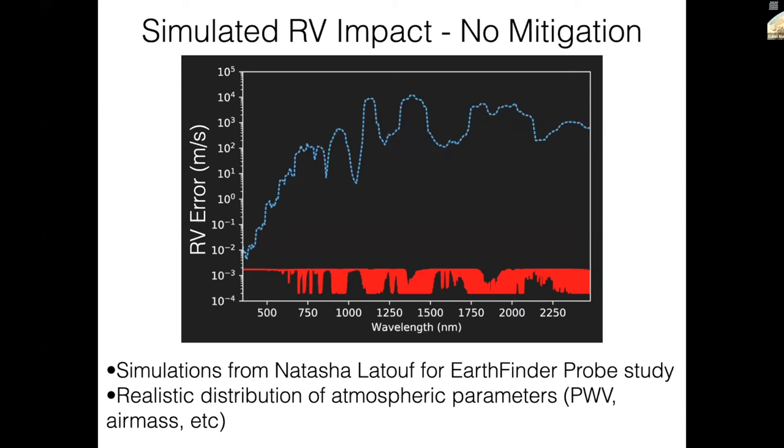This is a nice plot from simulations by Natasha Latouf. This was done in preparation for the EarthFinder probe study. Here she's looking at the expected RV bias in the no mitigation region, so we're doing nothing about these telluric lines at all. The telluric spectrum from the optical to the infrared is shown in red, and the expected RV error induced by just these lines themselves is traced out in blue. In the optical, you can do reasonably well. Maybe there are certain regimes in which you can just ignore these lines. But as you start to get to the infrared, it essentially becomes catastrophic. There are tiny regions where you might hope to work. These are familiar to us as the J, H, K, or Y, or Z observing bands. But in the general case, these telluric lines are going to be super problematic and could induce hundreds of meters a second in RV uncertainty.